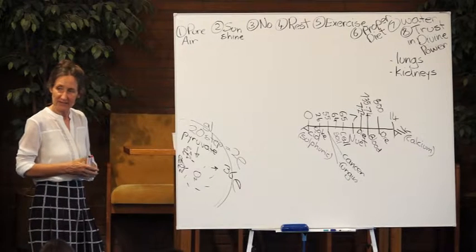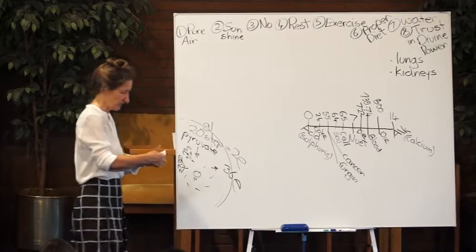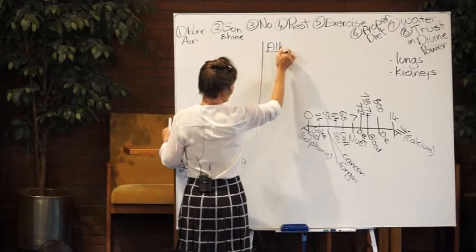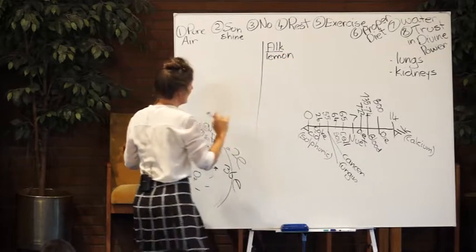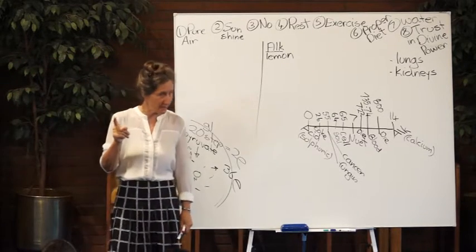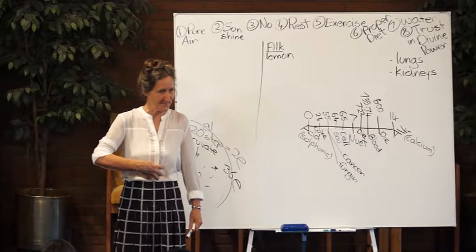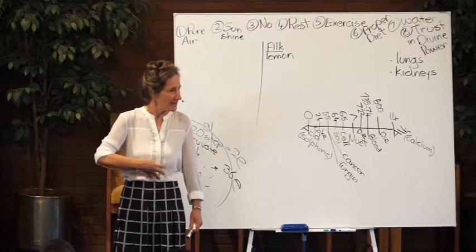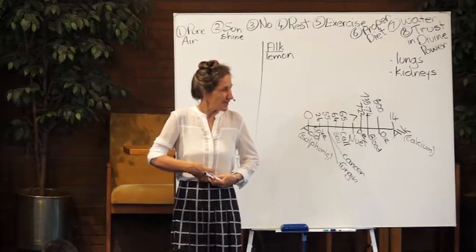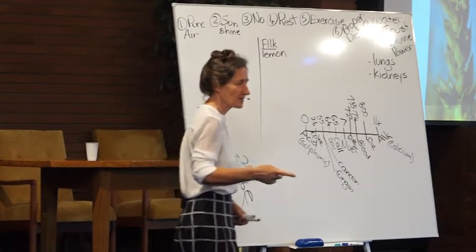But what probably affects the acid alkaline more than anything else that we do is the food that we eat. So I'm going to make a list of alkaline forming foods and I'm going to make a list of acid forming foods. The most alkaline forming food that you can put into your body is the lemon and you might say no, the lemon's acid. Well it's acid where it should be. There is only one part of your body that should be acid. Where's that students? Stomach.